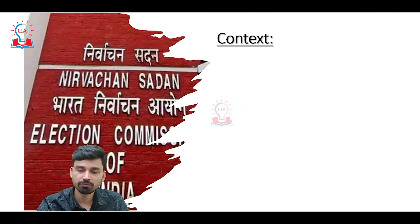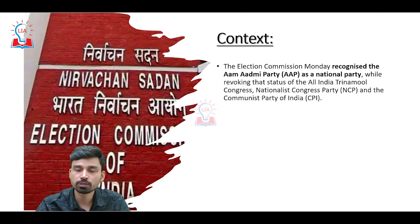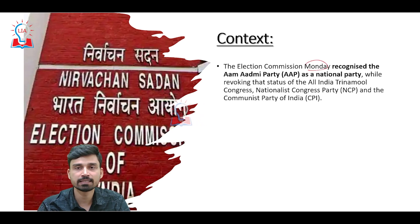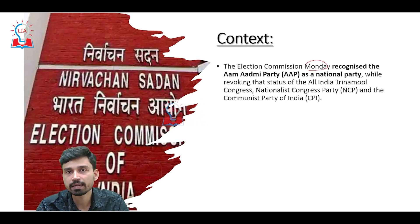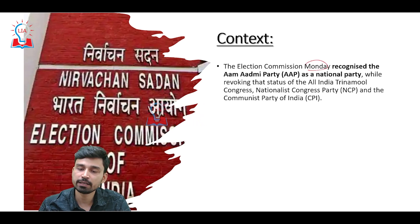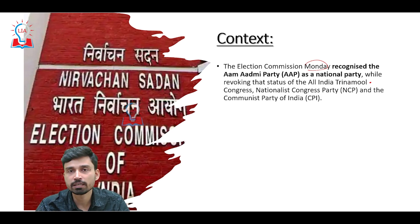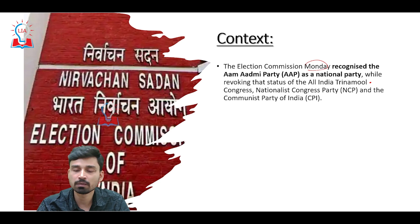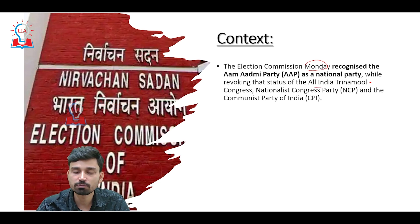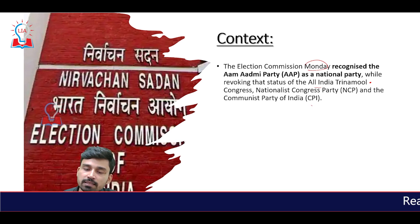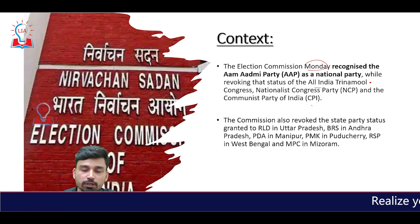To give you the brief context of this news, the Election Commission of India on Monday recognized the AAP party as a National Party, and at the same time in the same meeting they also revoked the status of National Party from three parties: All India Trinamool Congress from West Bengal, Nationalist Congress Party, as well as the Communist Party of India.